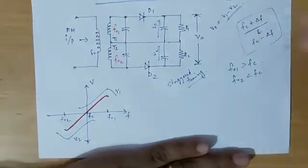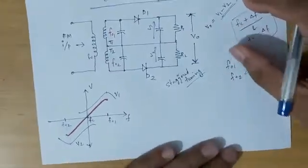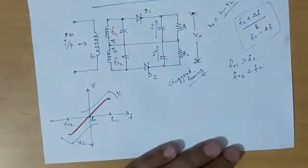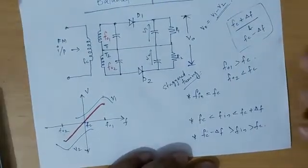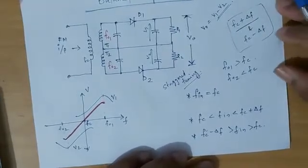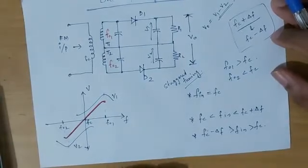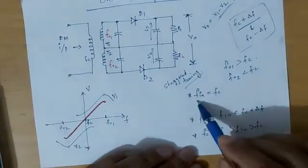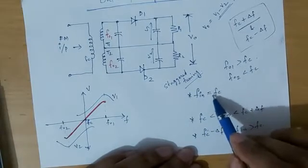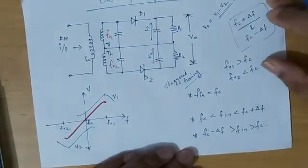The operation uses staggered tuning. The working of the balanced slope detector is explained using three conditions. The first condition is when the instantaneous frequency F_in equals the carrier frequency Fc.